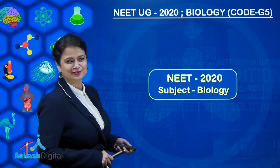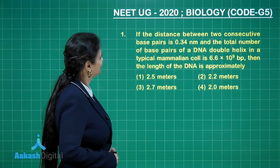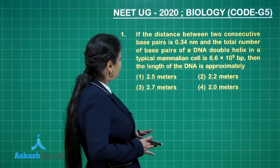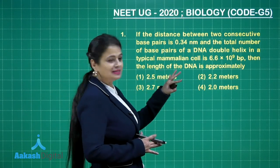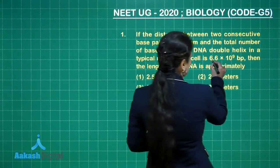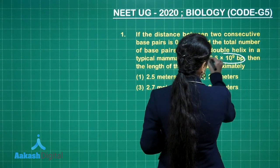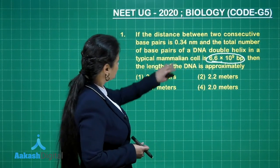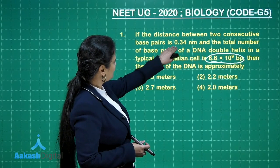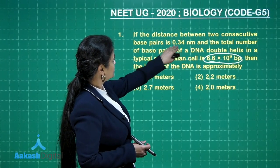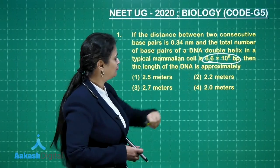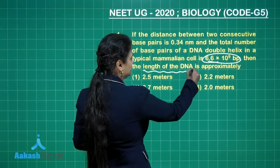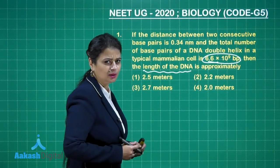Let's begin with the first question. This is about a double-stranded DNA in a typical mammalian cell. 6.6 × 10⁹ base pairs are present, and you know that the distance between two base pairs is 0.34 nanometers. We have to calculate the length of the DNA in meters — a very easy question from molecular basis of inheritance.